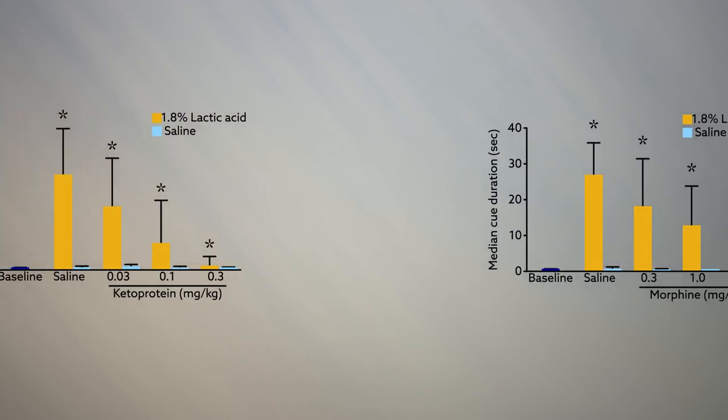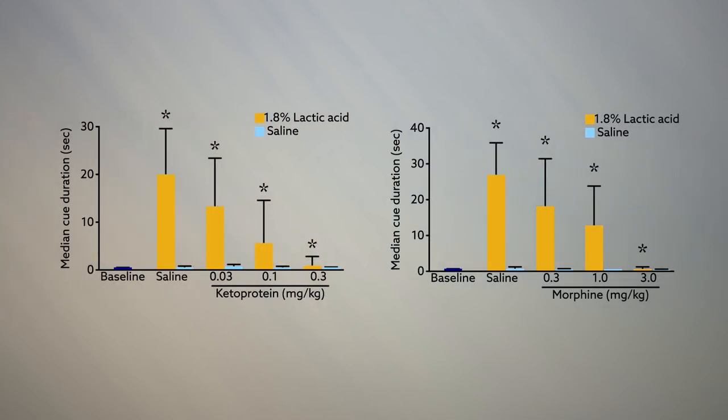Testing ketoprofen and morphine, the team found these known analgesics reversed the disruptive effects of abdominal inflammation.